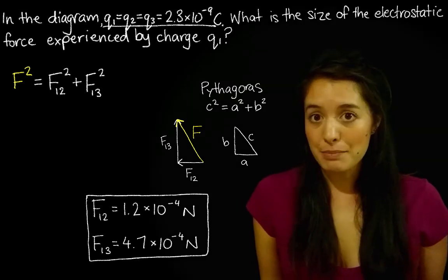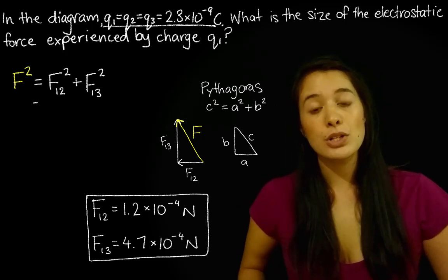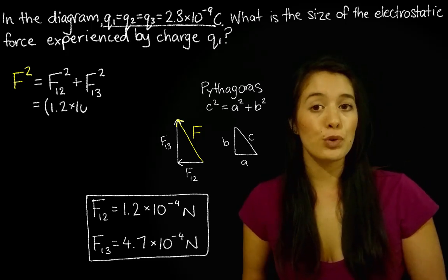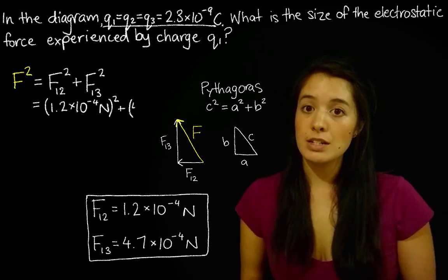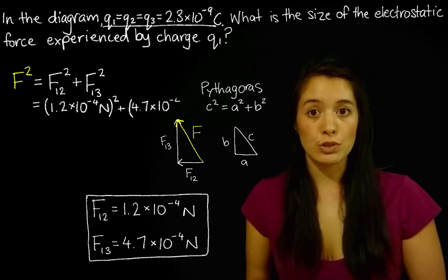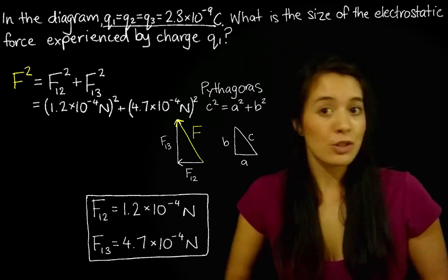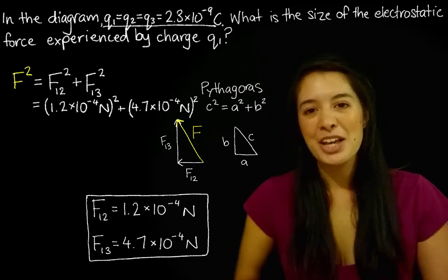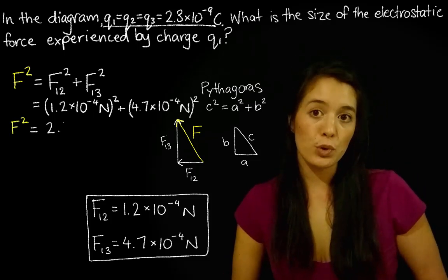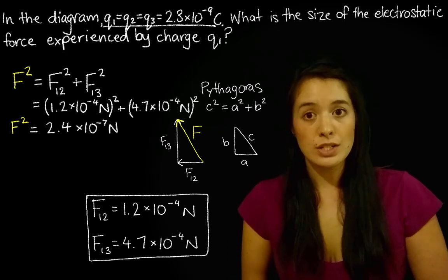So if we just plug in the numbers, we're going to get F squared is equal to 1.2 times 10 to the negative 4 newtons all squared, plus 4.7 times 10 to the negative 4 newtons all squared. And if we add these together, you can use your calculator, I know it's kind of hard with the scientific notation, we'll get F squared is equal to 2.4 times 10 to the negative 7 newtons.